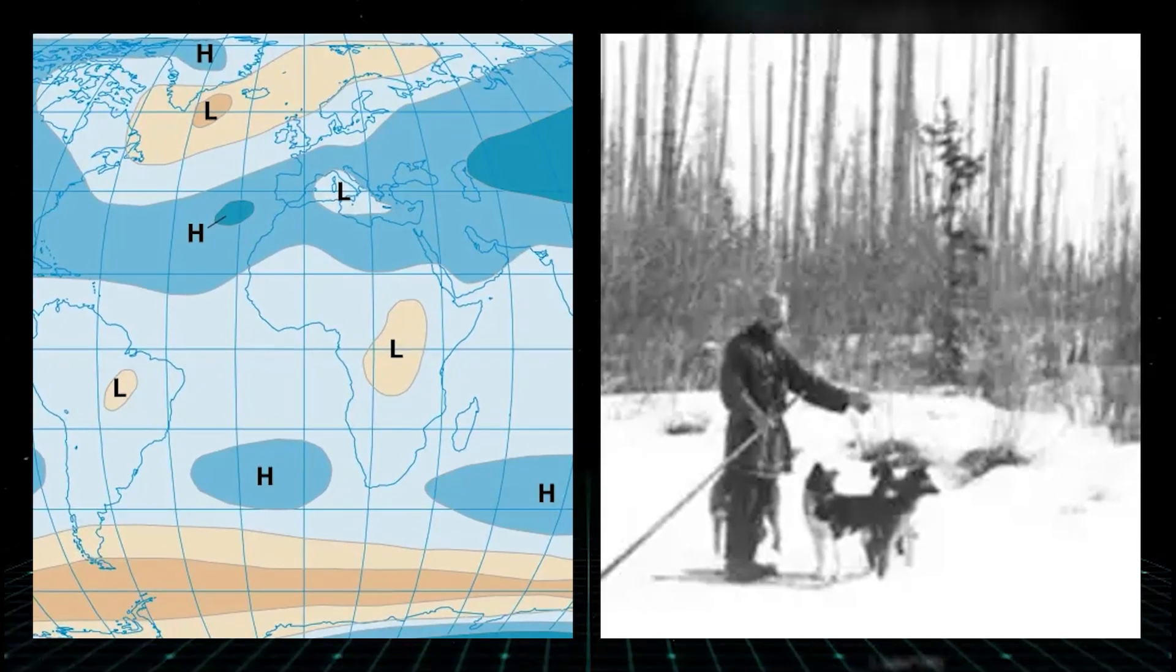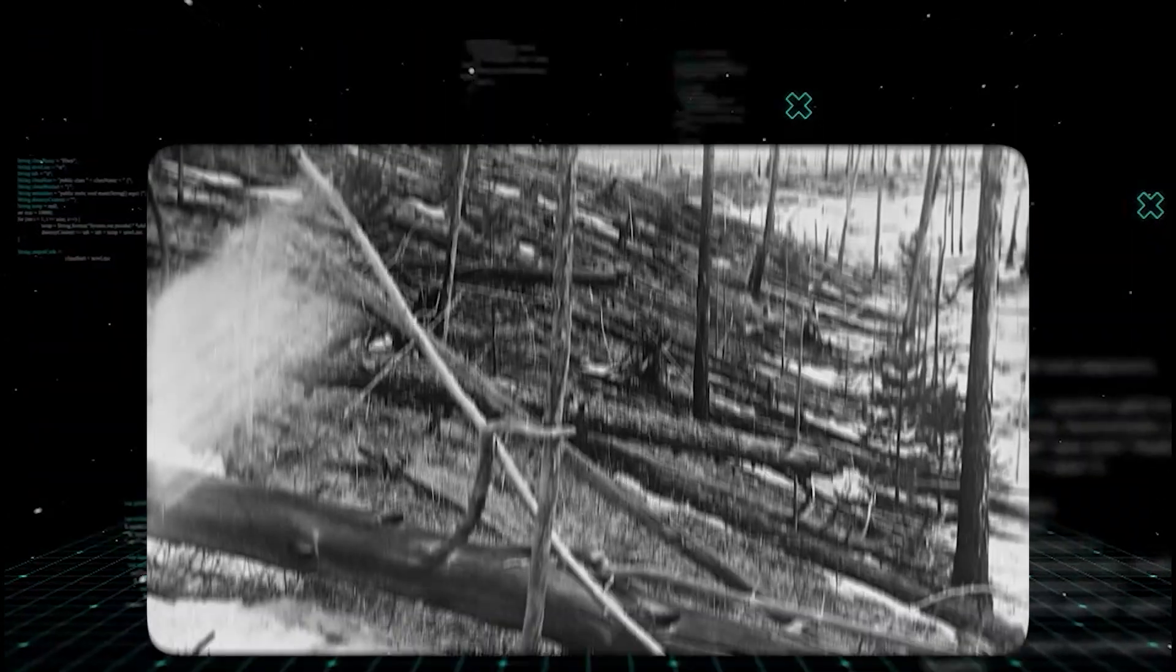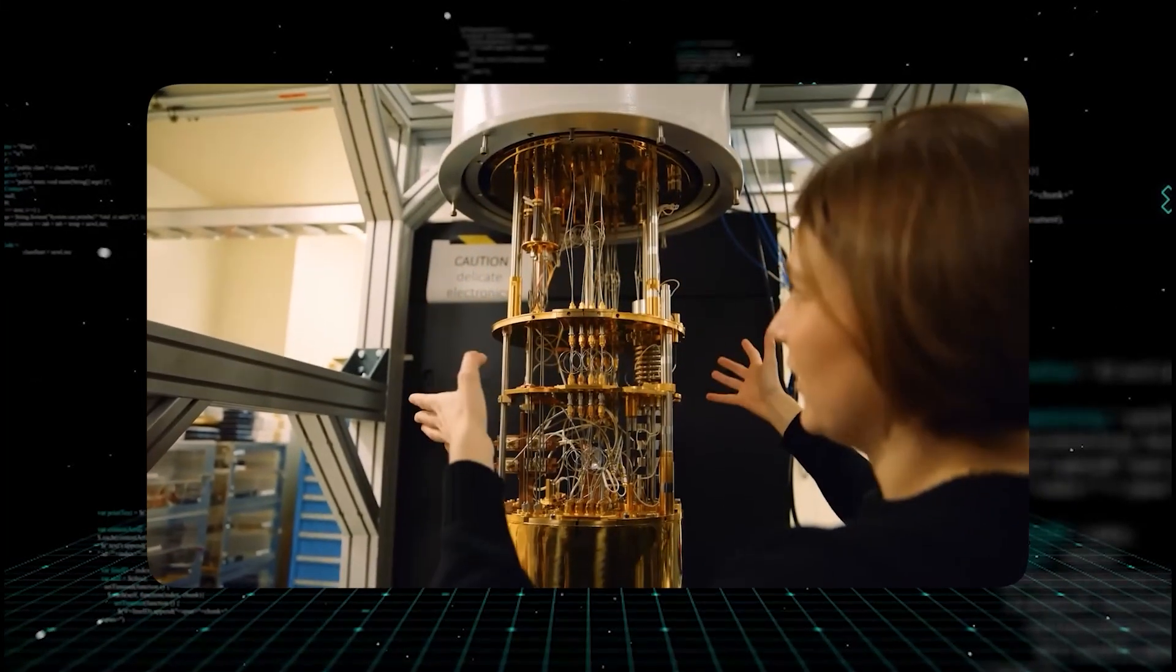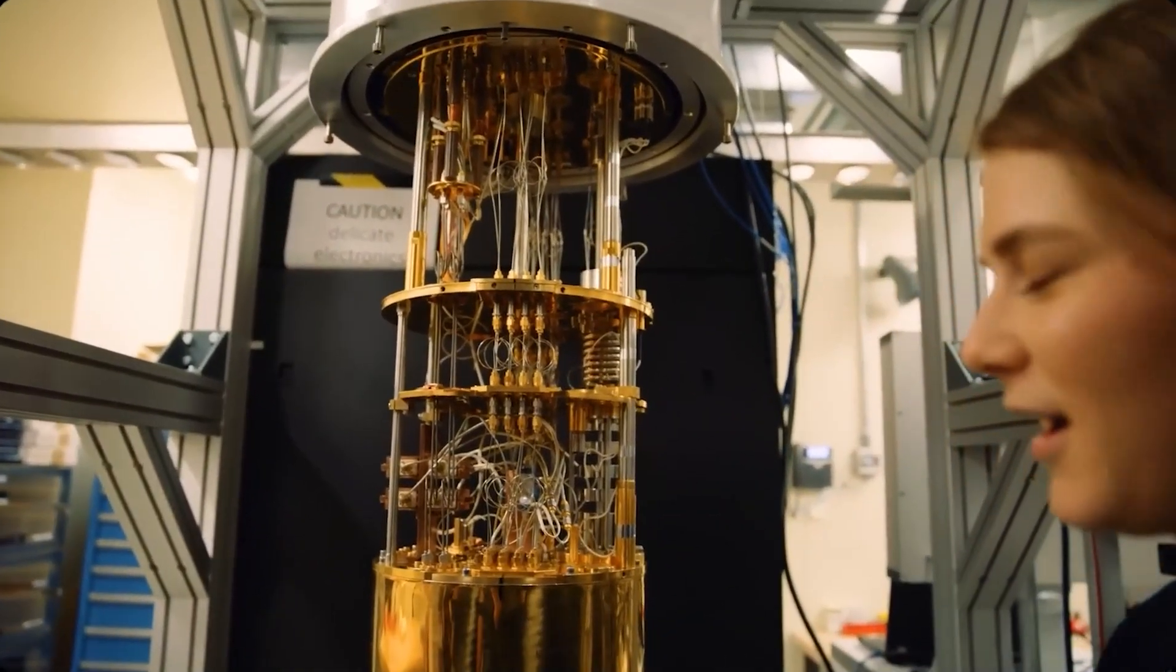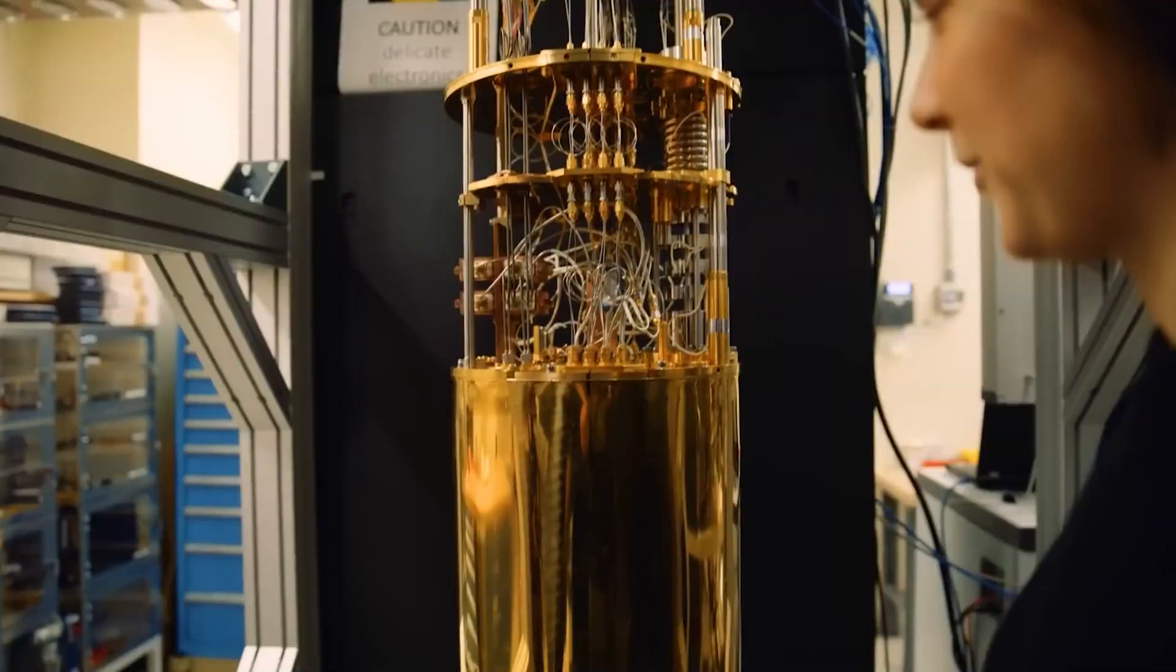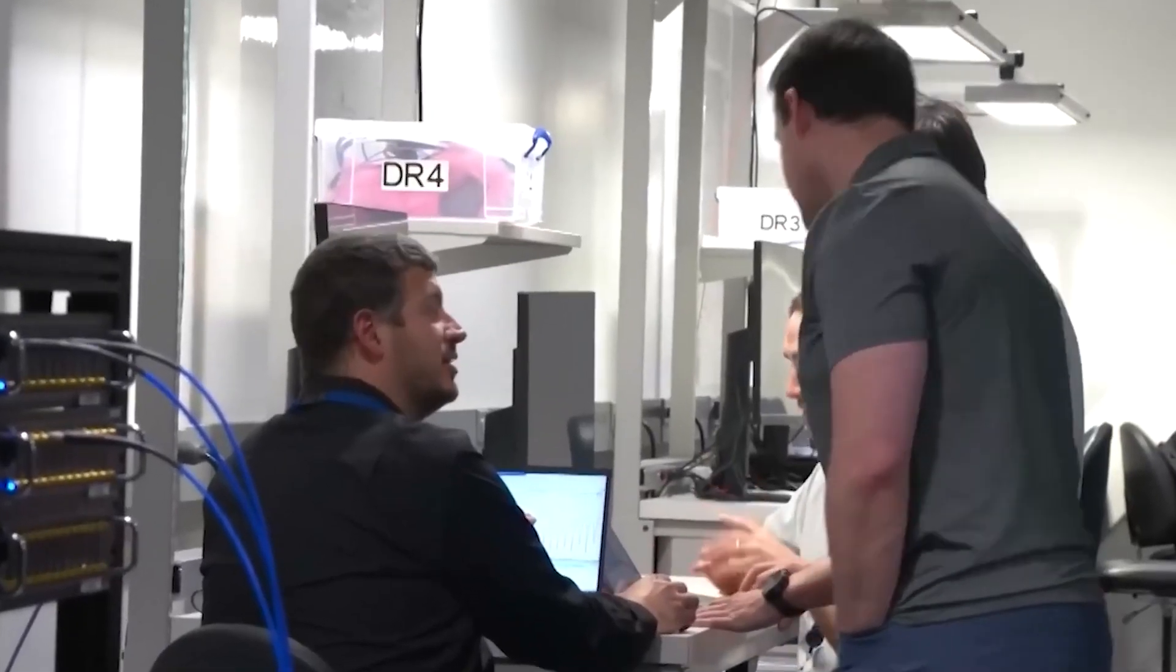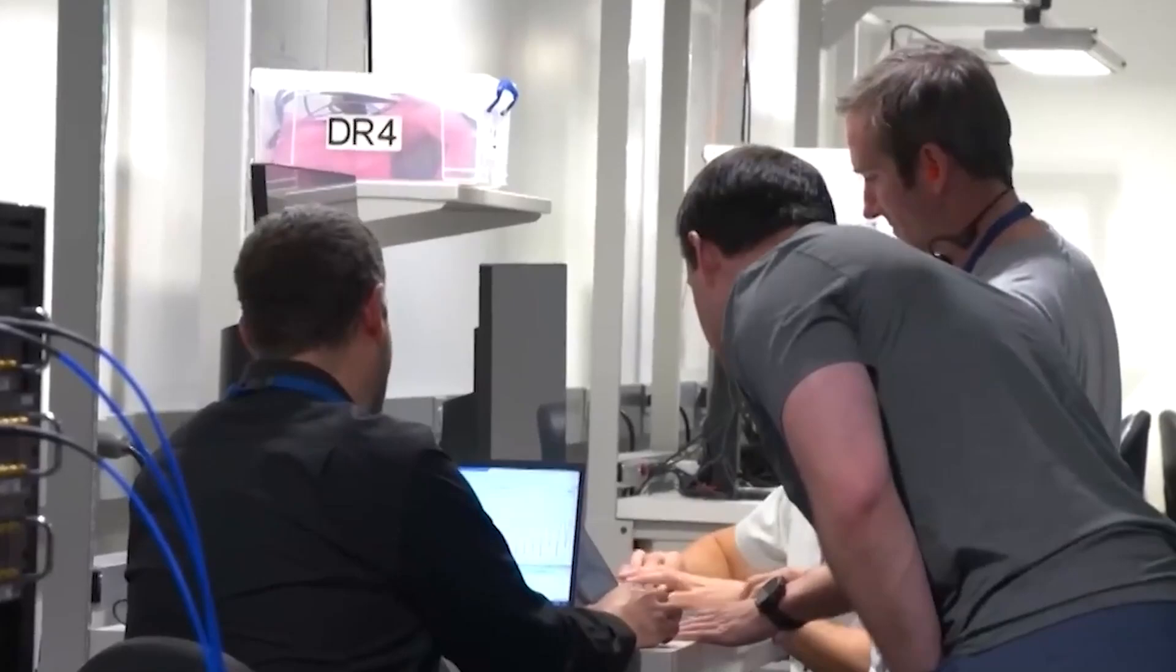The team of researchers loaded all the known data from the Tunguska event into its quantum processor. Barometric pressure readings, eyewitness accounts of the pillar of fire, and the strange pattern of the flattened trees. They hit run expecting the AI to spit out a perfect high-resolution model confirming the asteroid theory. What they got instead sent a shockwave through the entire lab.